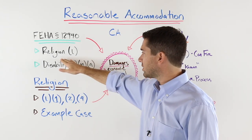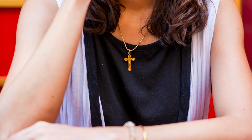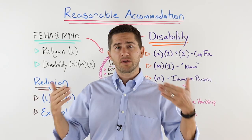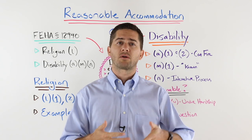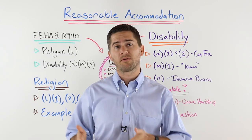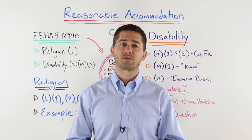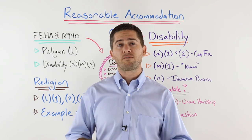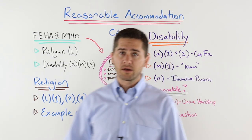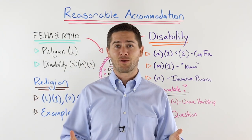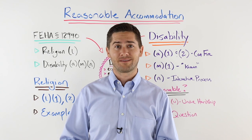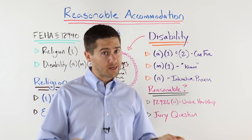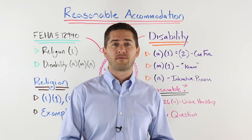It's very similar with religion — where somebody has a faith requirement like they can't work on Sundays but the employer wants them to work on Sundays. That's obviously a conflict. The law says employers are required to reasonably accommodate people of faith when their faith slightly conflicts with their job duties. That's the basics of reasonable accommodation law. We'll first review the religion requirements, then talk about disabilities, then discuss what is reasonable and what isn't, and finally the monetary damages an employee can win if their employer violates the law.